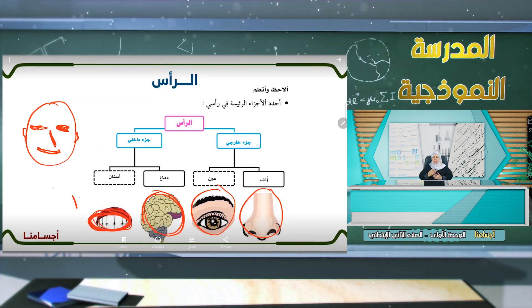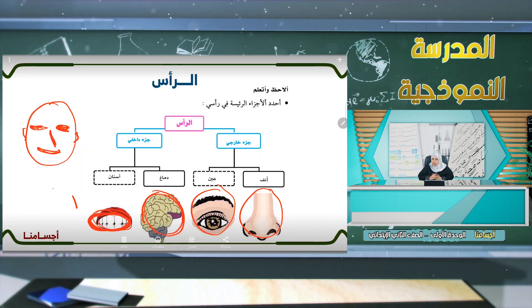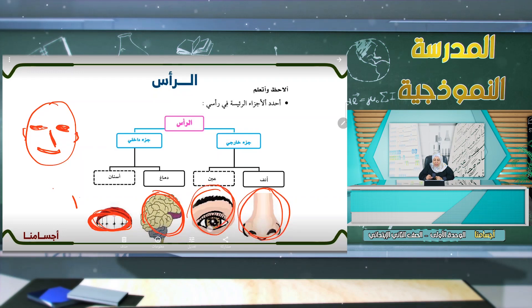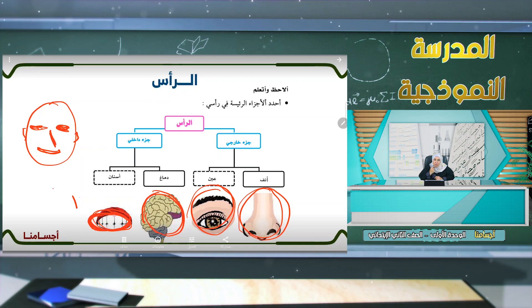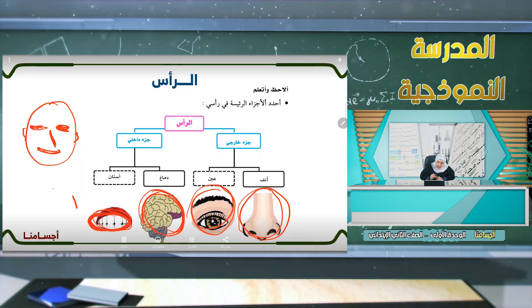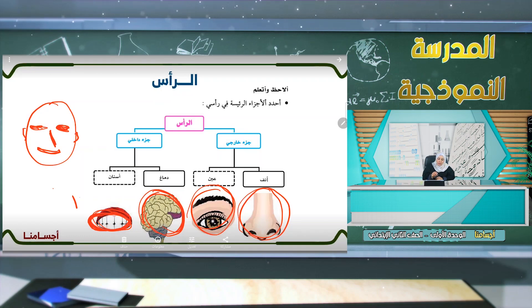الأجزاء الخارجية هي الأجزاء الظاهرة مثل أنف وعين وأذن وفم. أما الأجزاء الداخلية فهي التي لا أستطيع أن أراها كالدماغ واللسان والأسنان.